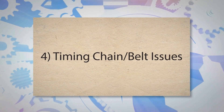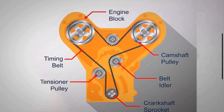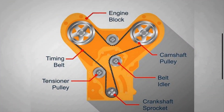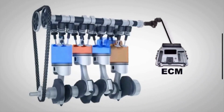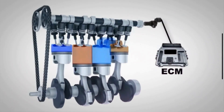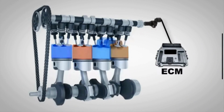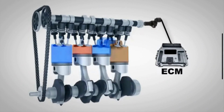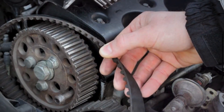Cause 4: Timing chain/belt issues. The timing chain or belt synchronizes the rotation of the crankshaft and camshaft. Over time, the timing chain or belt can stretch or wear out, causing the camshaft to become out of sync with the crankshaft. If the timing is too advanced due to a stretched or misaligned chain, it can trigger the P0021 code.